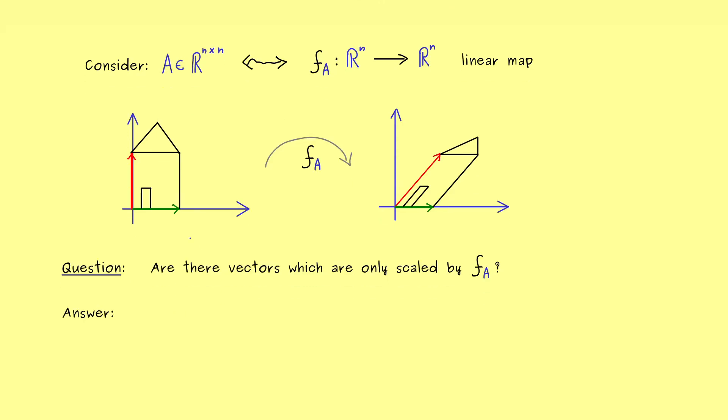And indeed, we can already answer this question, because we know how to deal with linear maps. Namely, f_A just acts by the matrix vector multiplication. Hence, Ax is the image of x under f_A. And now we want that this image goes in the direction of x again. Hence, the only thing we can have is a scalar lambda in front of this x.